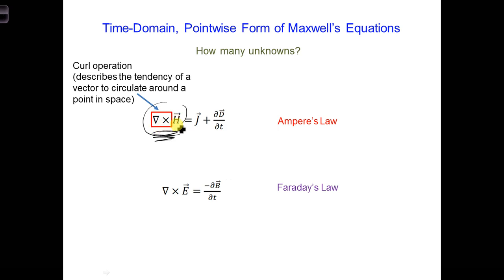it tells us how well the H field circulates around the point in space. So when you perform a curl operation on a vector, it tells you how well that field is circulating around that point.